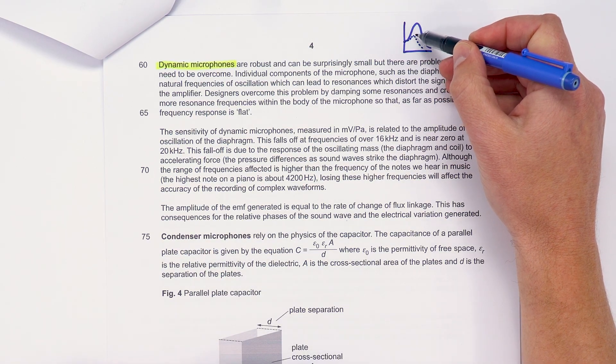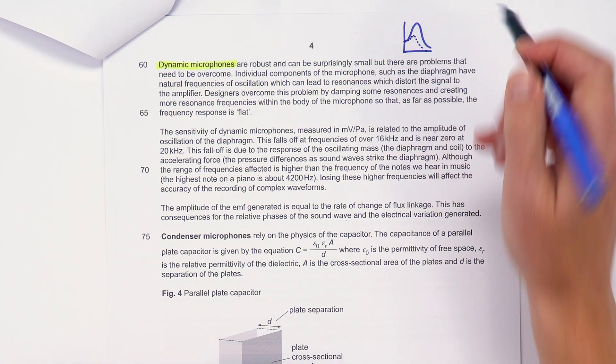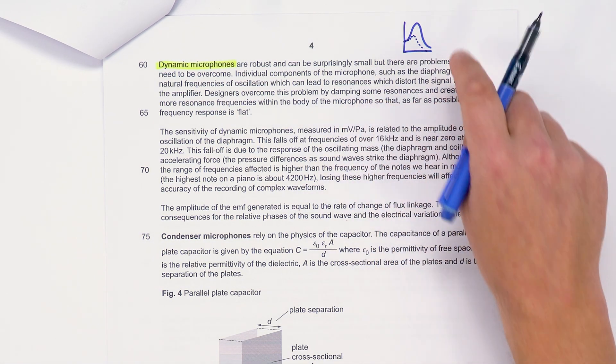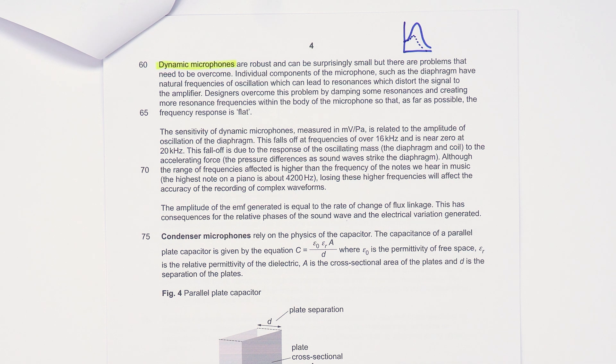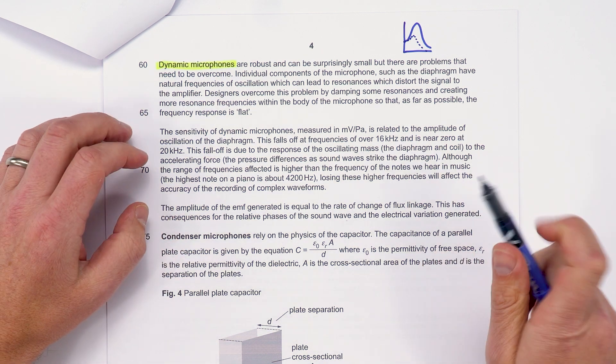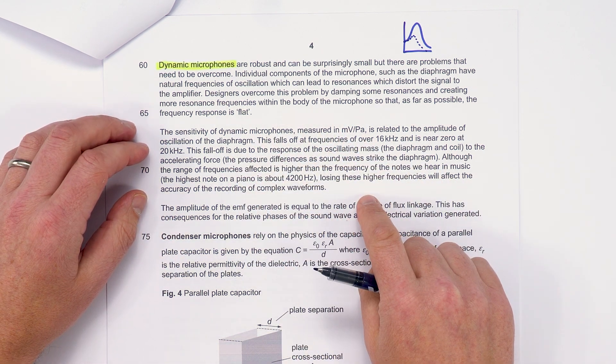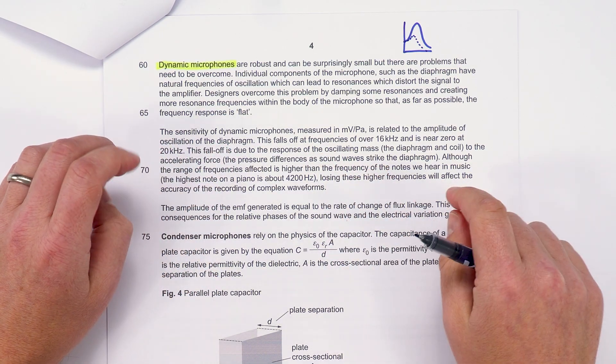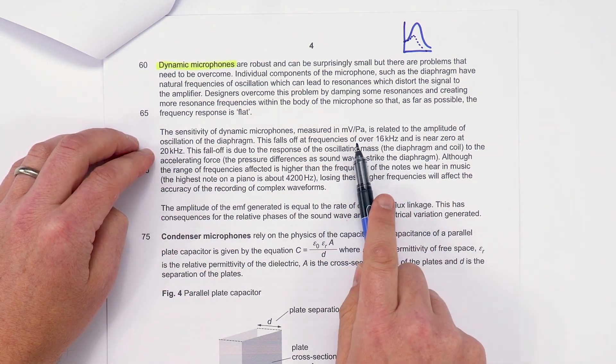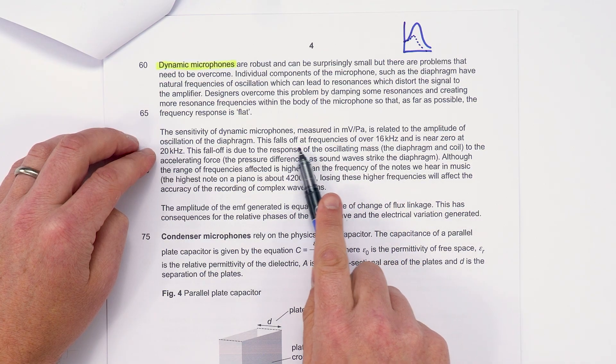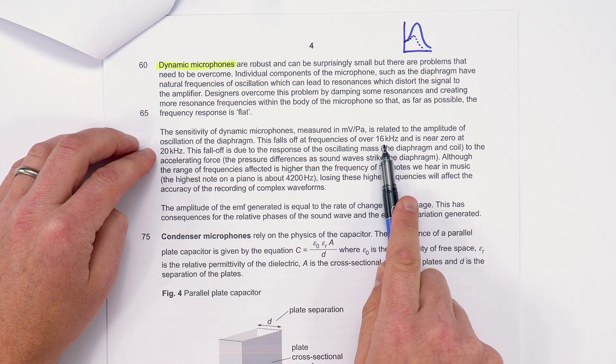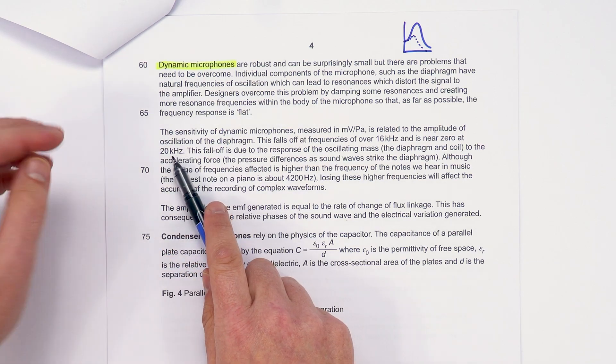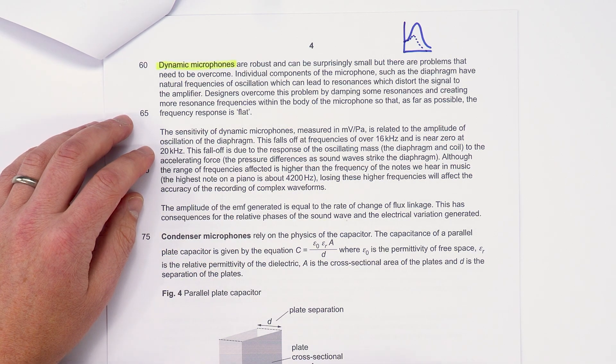You need to think about as things are being damped, what that does to the overall motion and how that might adjust the resonant frequency. You already need to know about resonance and how that could be represented on a graph. I suspect they might give you a graph looking at the sensitivity of these dynamic microphones at different frequencies. It says this falls off at frequencies over 16 kilohertz and is near zero at 20 kilohertz, which is the upper threshold for human hearing.